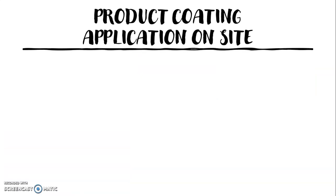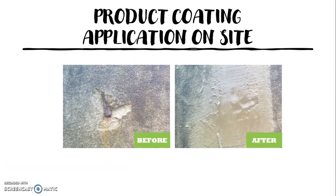This is another on-site coating application. You can see the exposed reinforcement bar in the concrete structure. We applied the HGC to the problem area to protect the reinforcement bar and prevent it from posing a danger to people who may come into contact with the corroded bar.